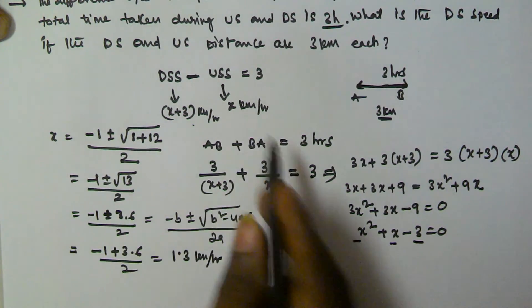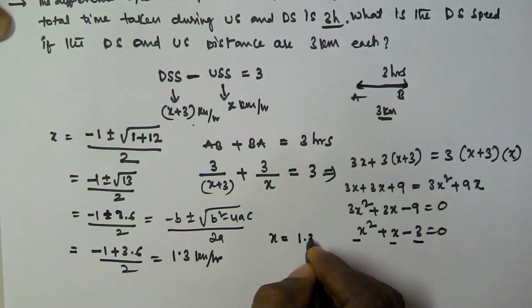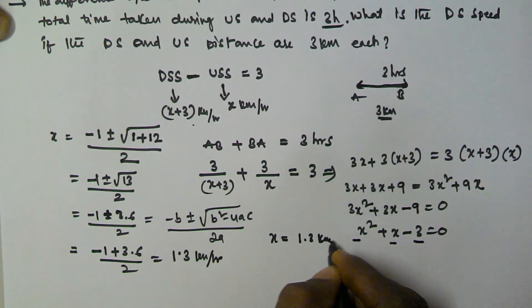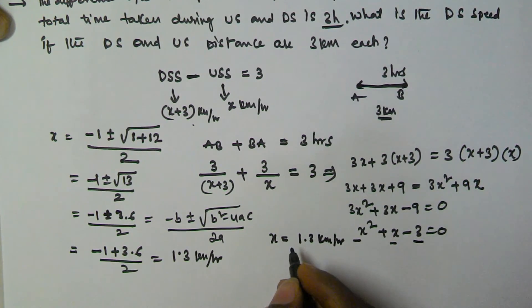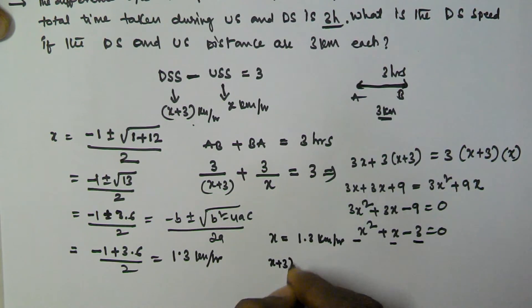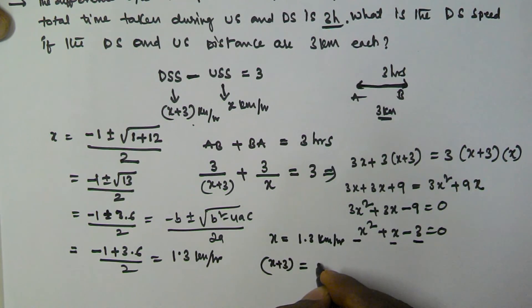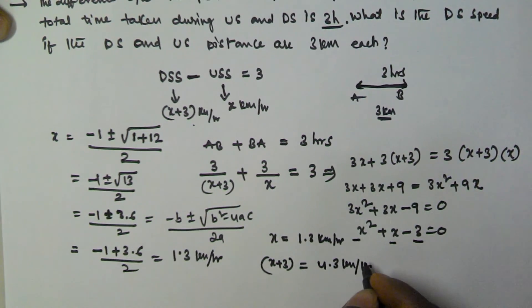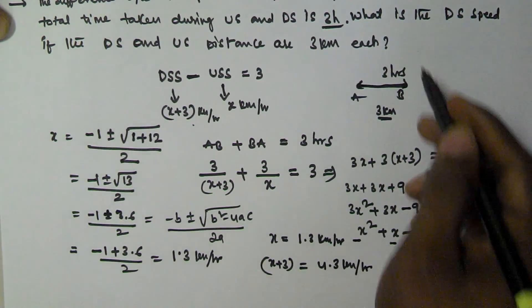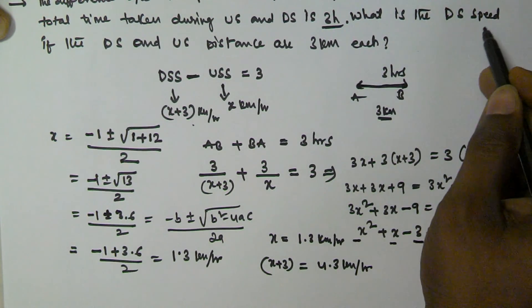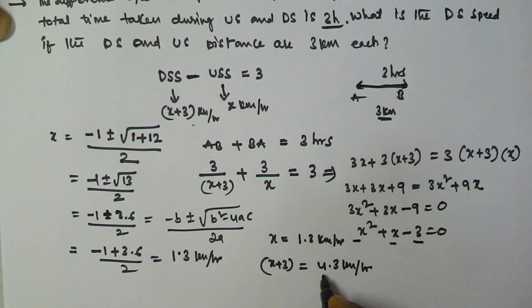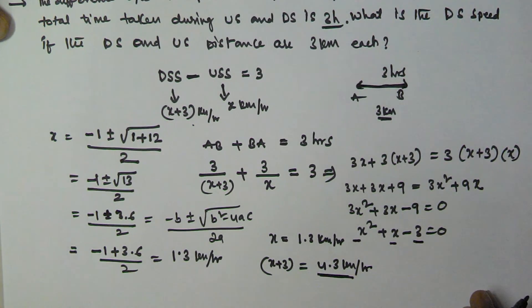Since speed can never be negative, we take the positive value only: x equals (minus 1 plus 3.6) divided by 2, which equals approximately 1.3 km per hour. X is the upstream speed, so upstream speed is 1.3 km per hour. The downstream speed is x plus 3, which equals 4.3 km per hour. So the downstream speed is 4.3 km per hour. I hope you got this. Thank you very much for watching this video, and please subscribe to my channel.